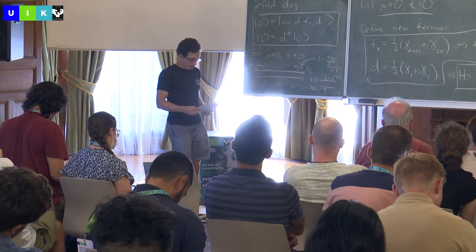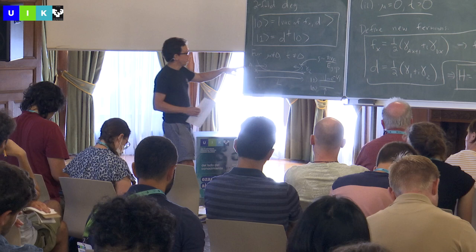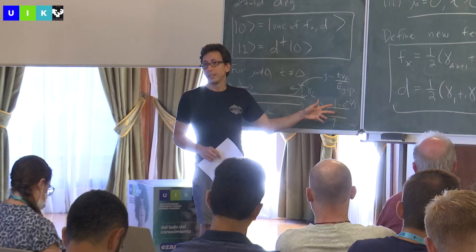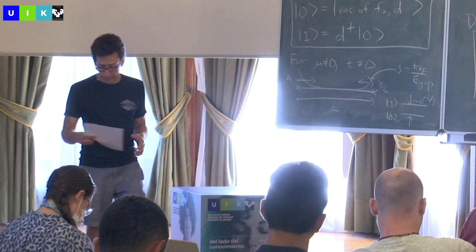Whenever you hear anyone talking about Majorana zero modes, topological degeneracy, and so on, you should always interpret those words as meaning modulo exponentially small corrections of this type — corrections that can be made arbitrarily small by making the system size bigger and bigger.